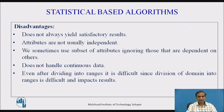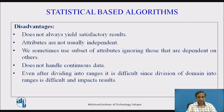The disadvantage of Naïve Bayes is that it does not yield satisfactory results in many situations because it is probability-based. Attributes are not usually independent, but we want them to be independent so that the classes will be well defined. We sometimes use a subset of attributes, ignoring those that are dependent on others. It does not handle continuous data well, and even after dividing into ranges, the division of the domain is difficult, which impacts the results produced by this algorithm.